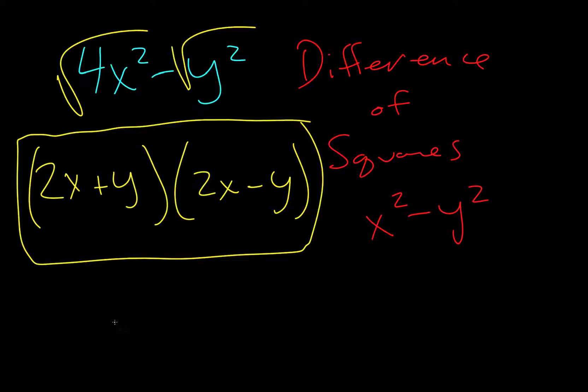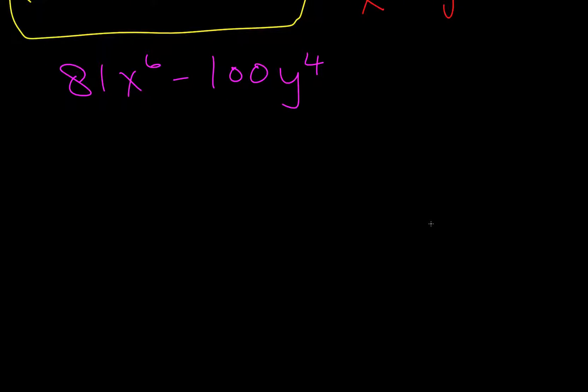So let's try another one. Let's do 81x to the 6 minus 100y to the 4. Actually, I'm going to change this x to the 8. You'll see why in a second why I did that. So we have something squared minus something squared, so that means we can do this.